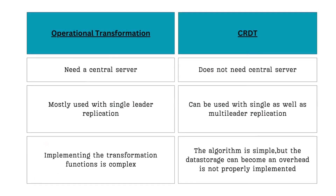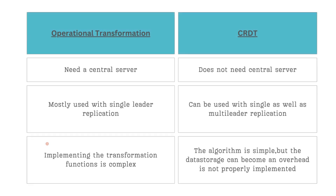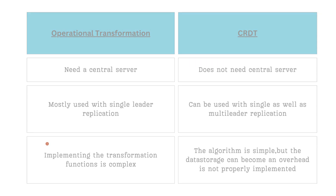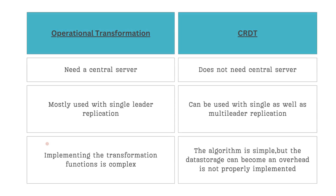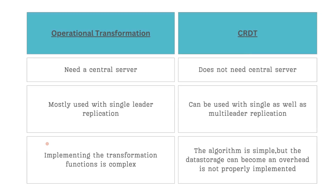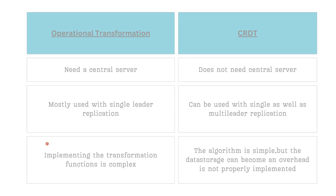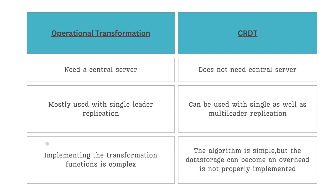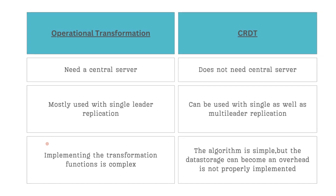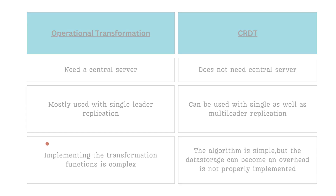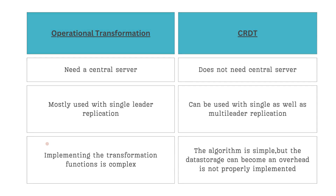Both Operational Transformation and CRDTs solve the conflict resolution problem and are widely used in real-time collaboration tools. The choice between them comes down to trade-offs. For example, OT requires a central server while CRDTs do not — so if your system design needs to avoid relying on a central server, CRDTs are the better choice.